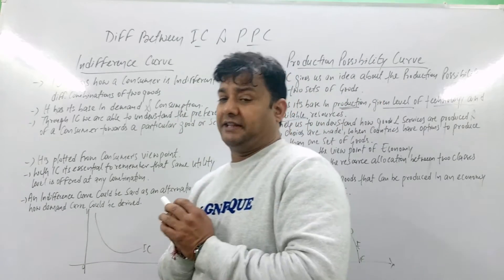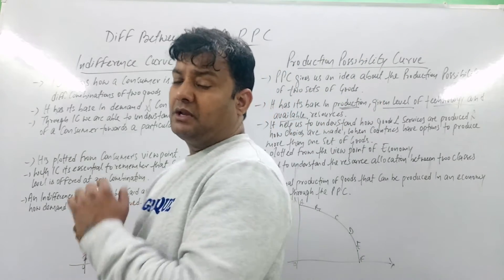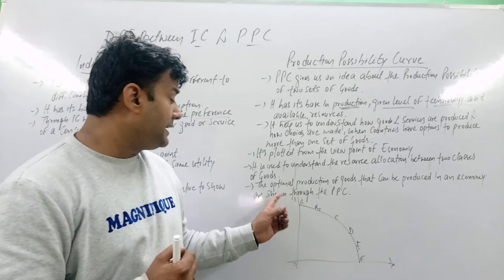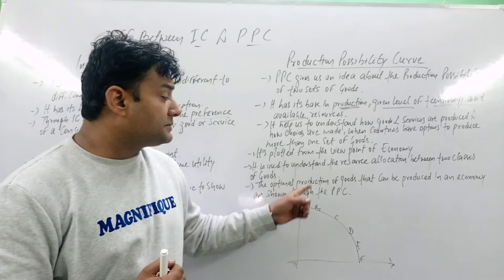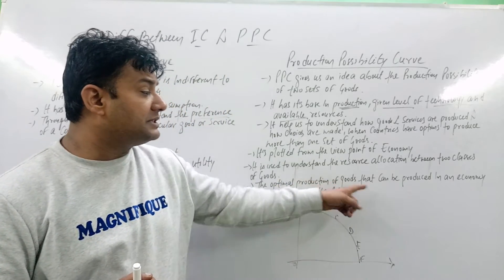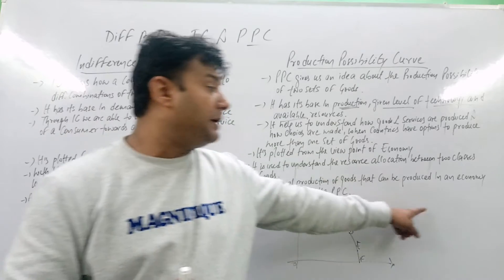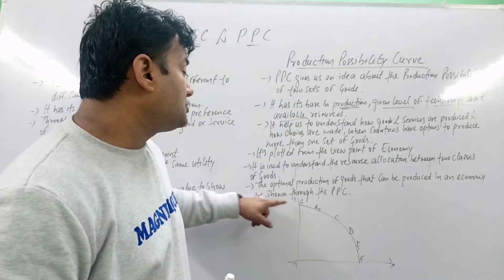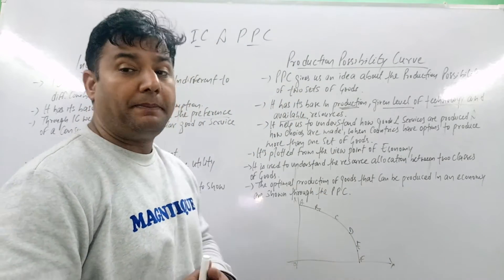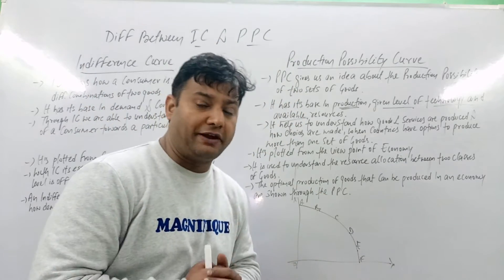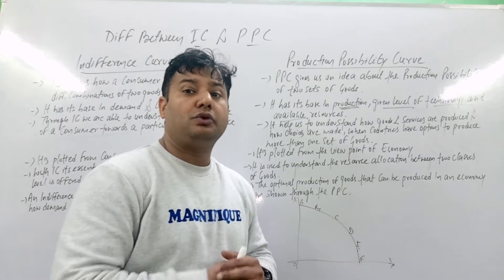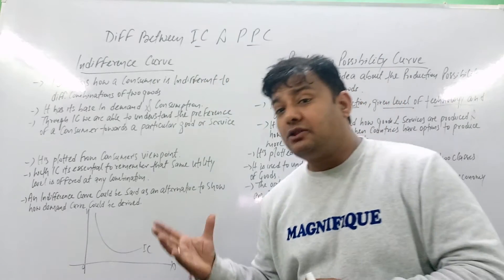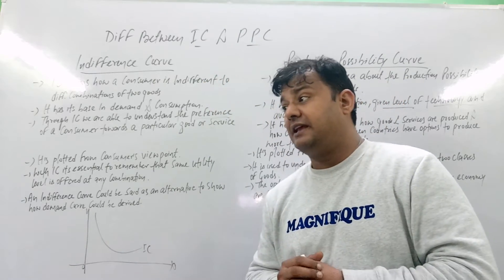The demand curve is derived from the indifference curve. When we talk about the production possibility curve, it shows the optimal production of goods and services that can be produced in an economy through PPC. This was the basic summary of these two differences.